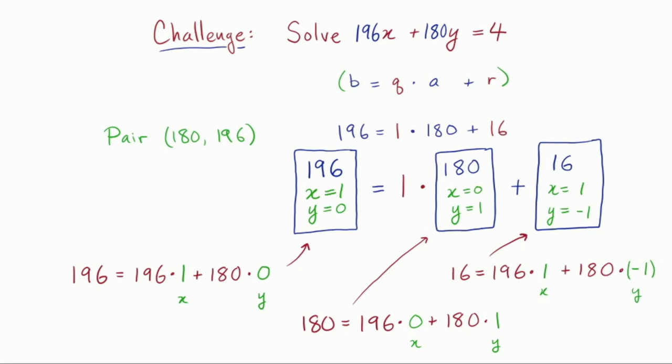But wait a second, where did we get that info from? The first two cards were very clear. To get 196 or 180, it's pretty obvious what to pick for x and y. But 16? So recall that the original equation is written across the top of the cards. 196 is 1 times 180 plus 16. But actually, the other rows of the cards work the same way. So for example, the x values, which is the middle row, satisfy that 1 is 1 times 0 plus 1. And the y values, 0 is 1 times 1 plus negative 1.